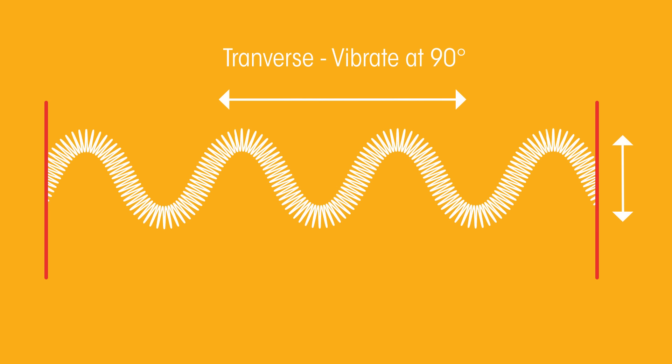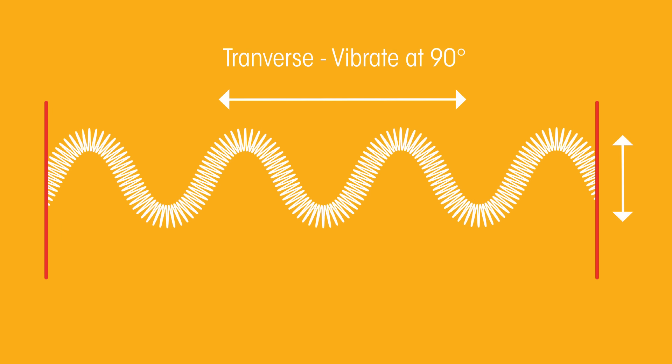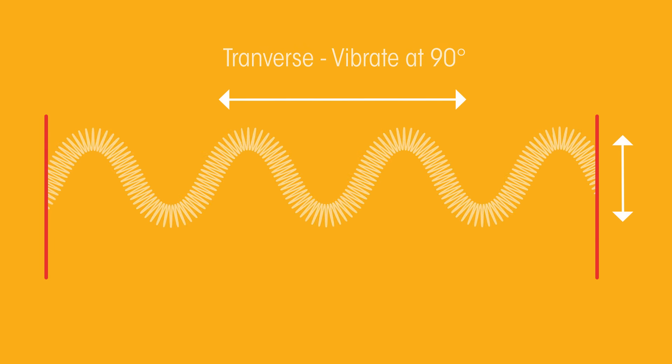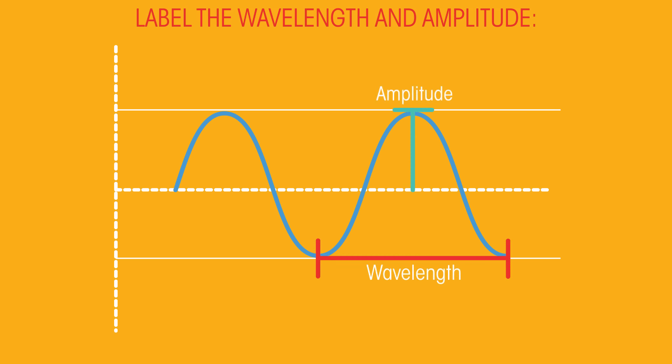Again, the ends of the slinky never leave the hands holding it — it's just the energy that moves along. Transverse waves are usually used to show the wavelength and amplitude. Pause the video and see if you can remember how to label the amplitude and wavelength on the diagram. Did you get them right?